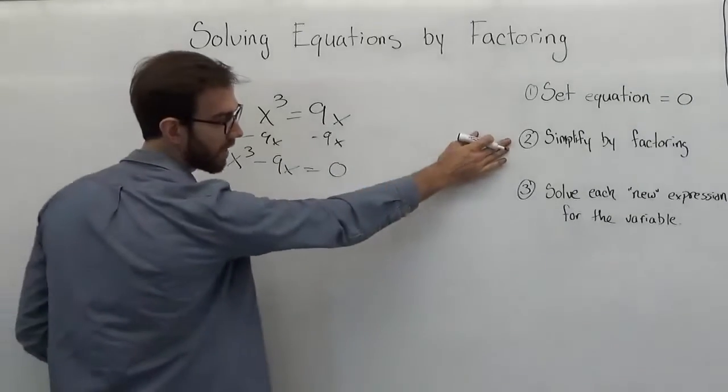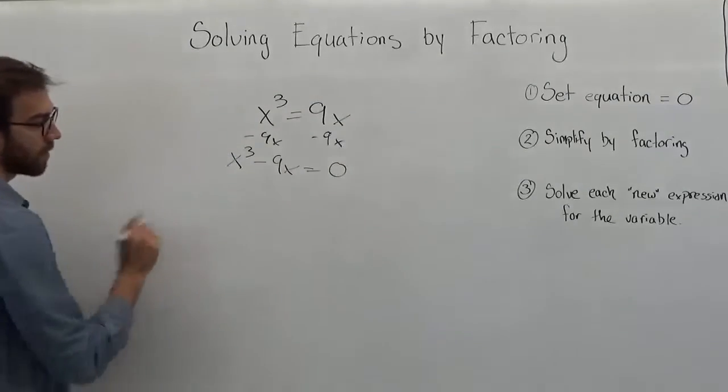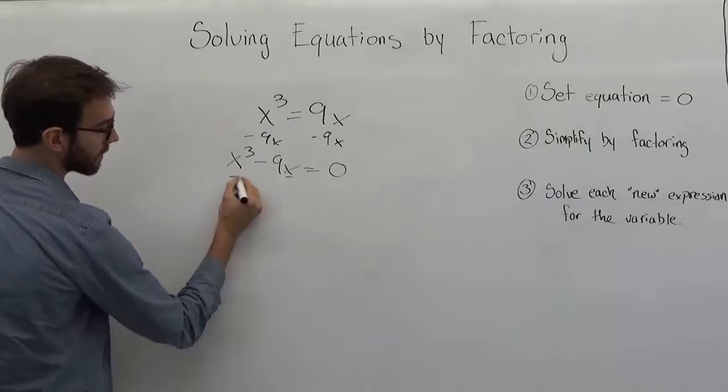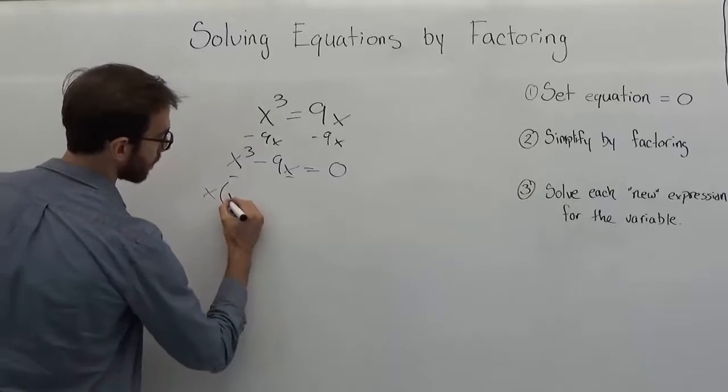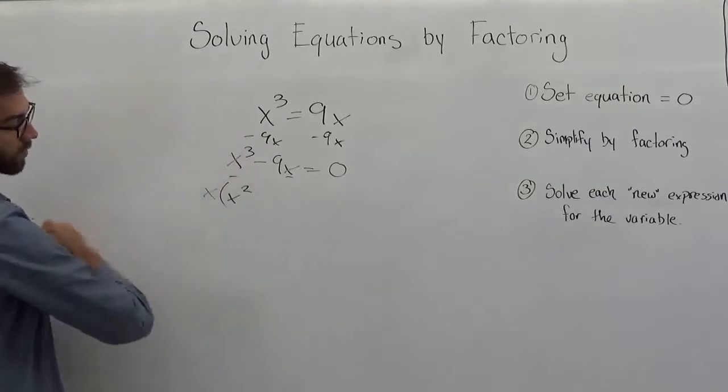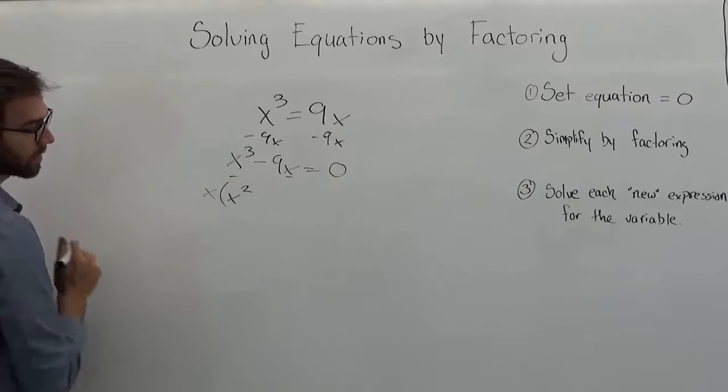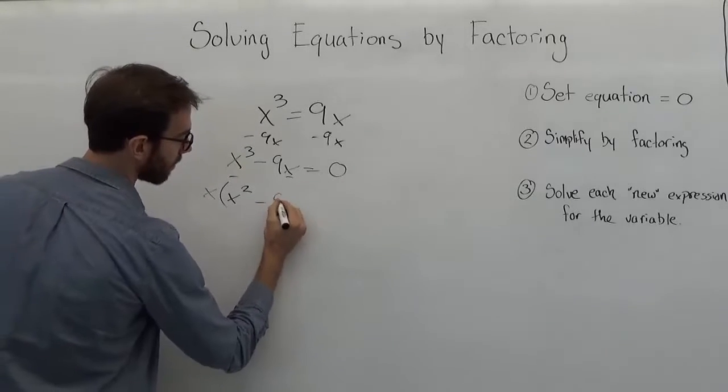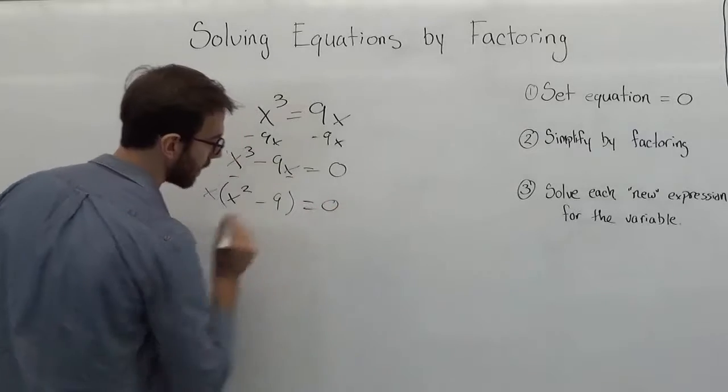Now, we want to simplify this by factoring. What do we have in common here? Well, we just have an x in common. So we'll take that out. Now we have x squared. We distribute that back in, that's x to the third. And we have minus 9, equals to zero.